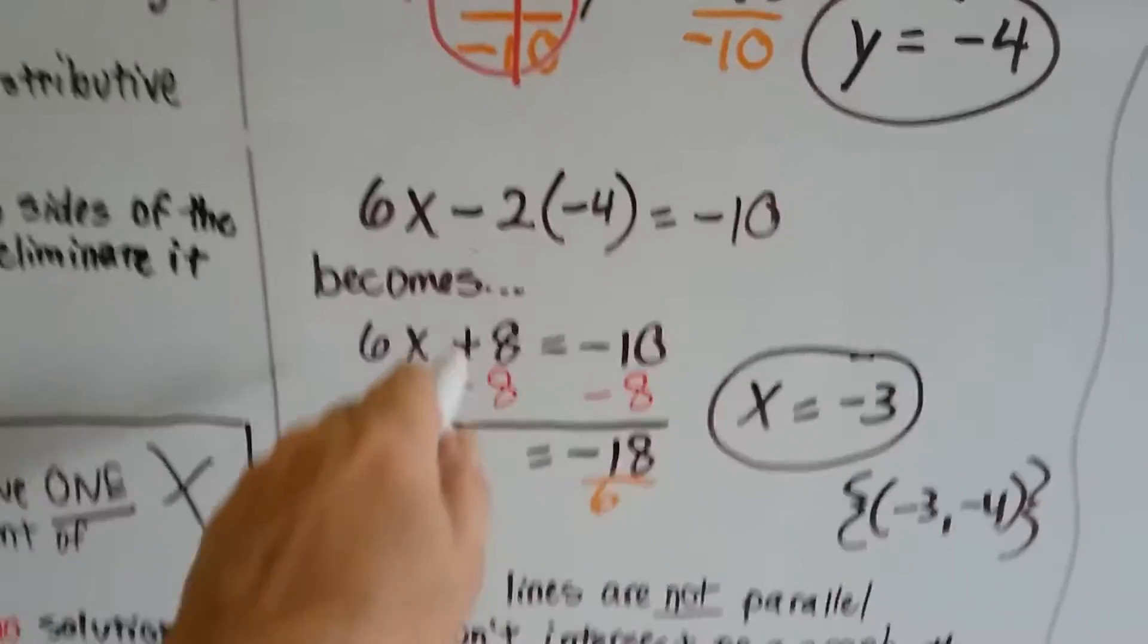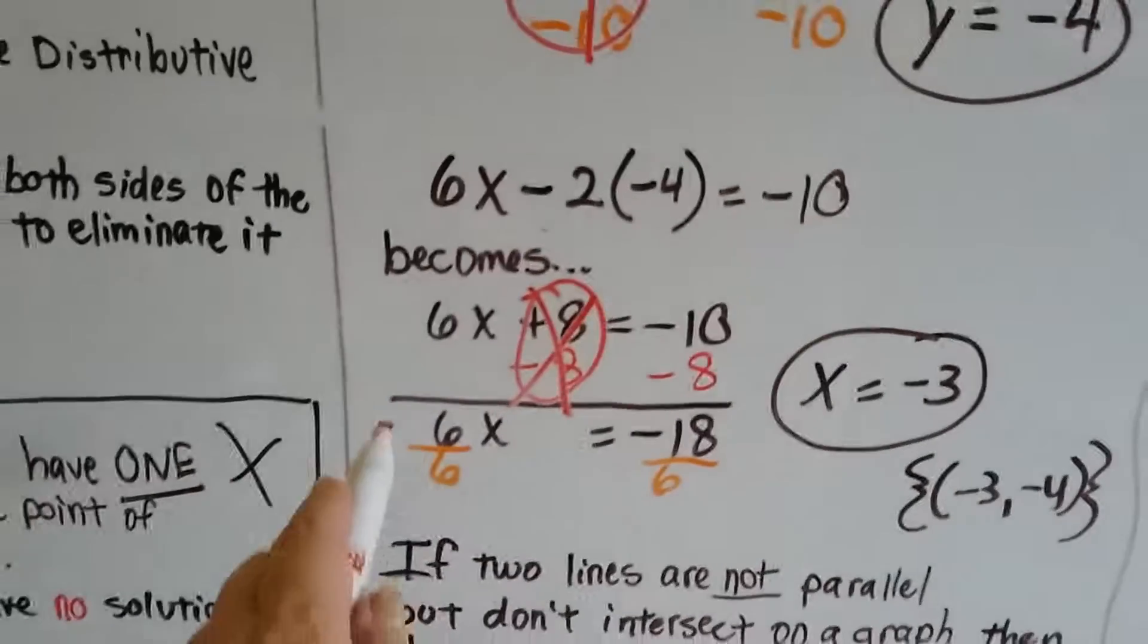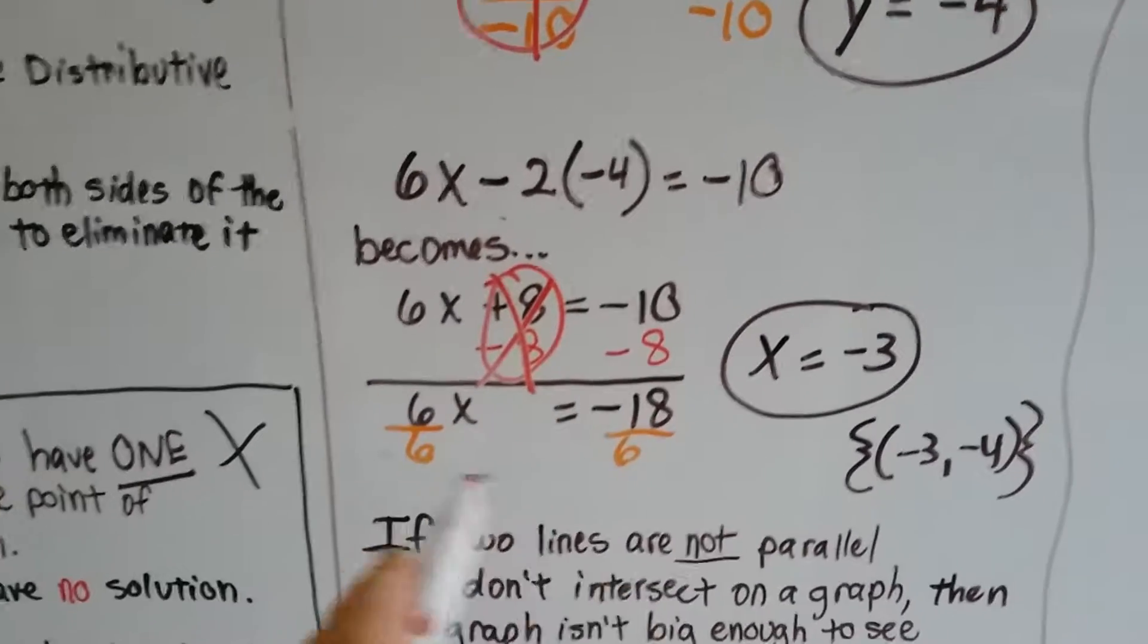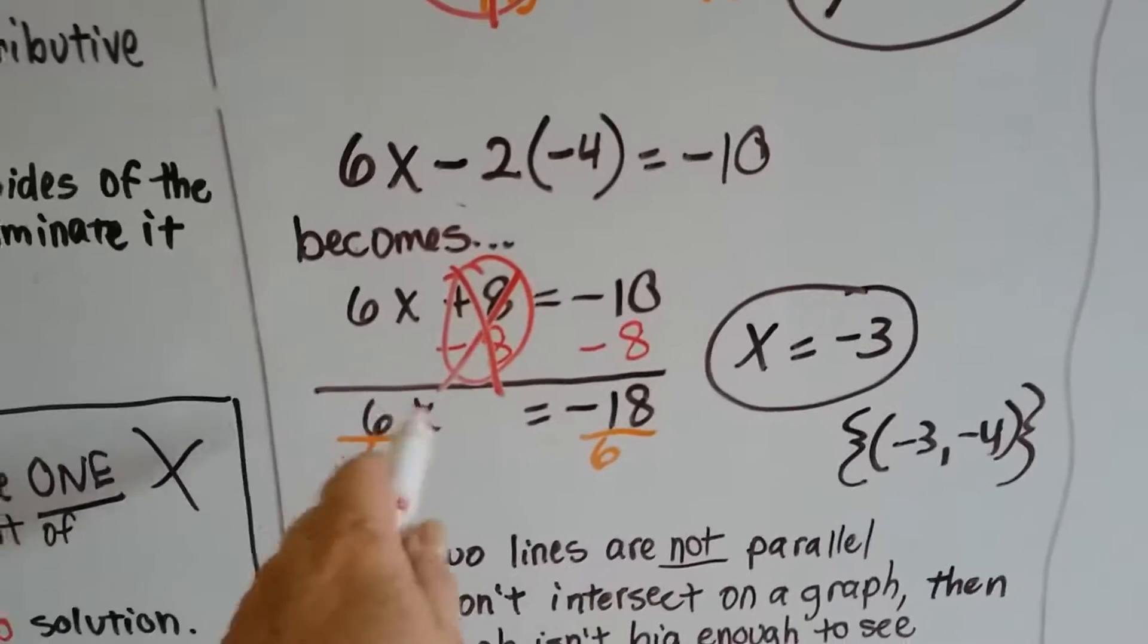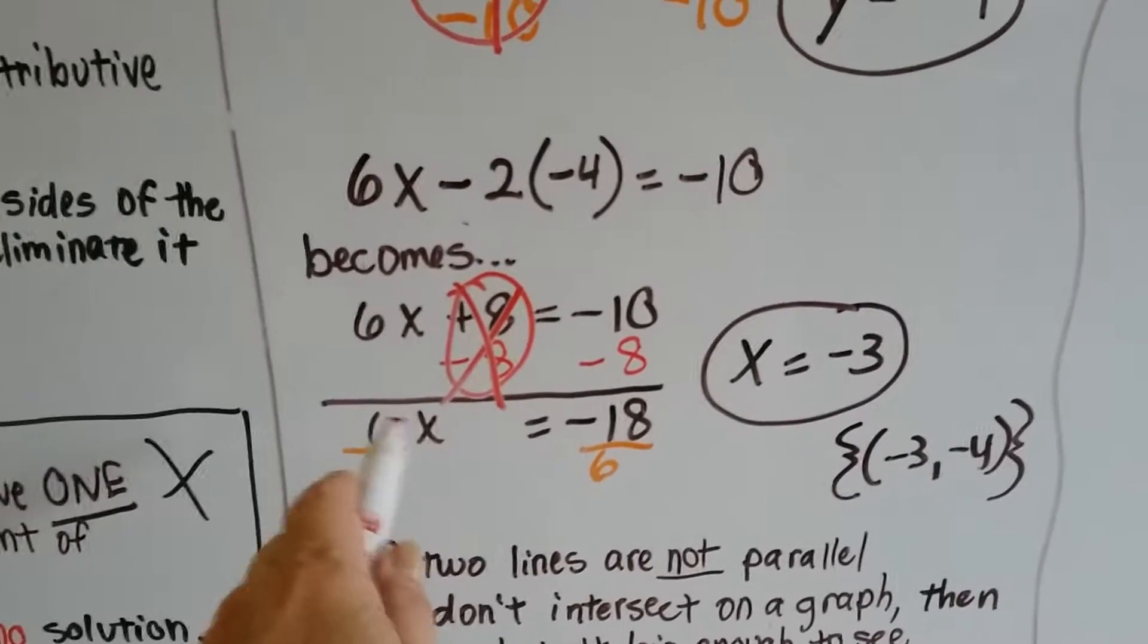We subtract 8 from each side, create a zero pair and eliminate this. We've got 6x = -18. Divide each side by 6 because that's the inverse of multiplication.